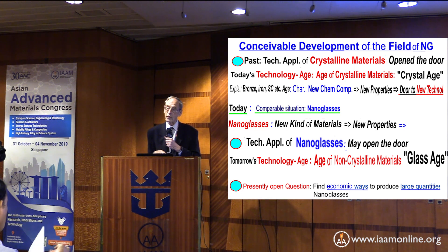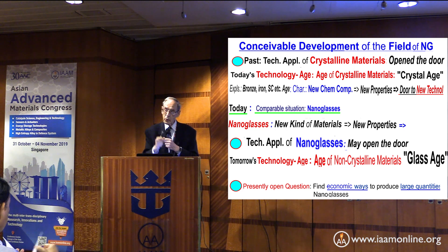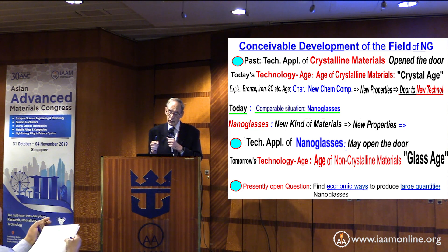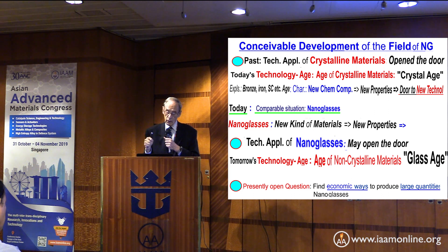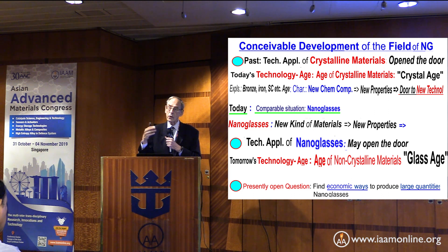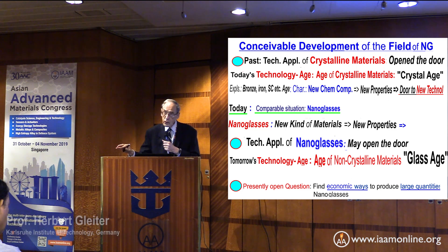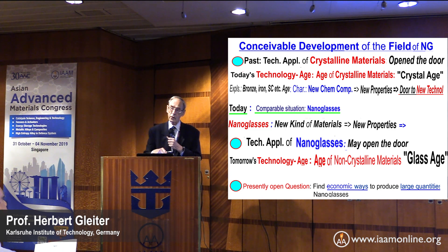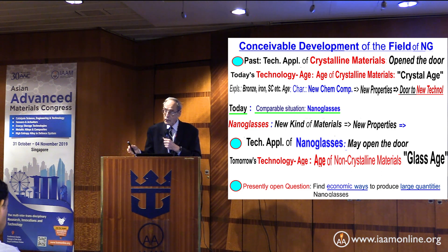With nanoglasses, we have a very similar situation: a new material with new properties. The hope is that by applying nanoglass technology, we should be able to create a new technology period — not based on crystalline materials as today, but on non-crystalline materials. This should apply to metals, semiconductors, and ceramic materials, and due to the new properties of these glasses, it would open a whole new world of technologies.